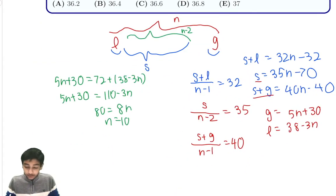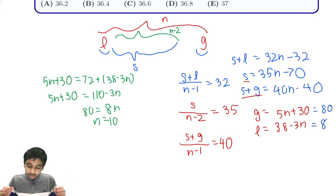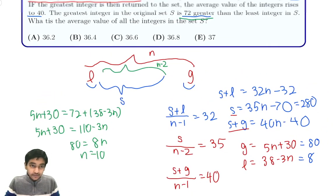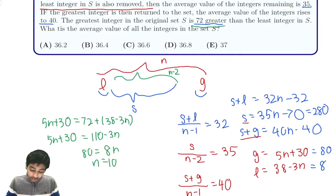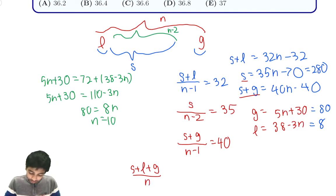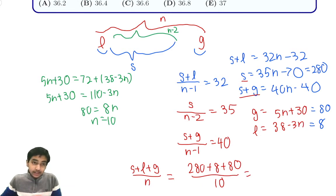Now let's substitute n equals 10 back in. G equals 5(10) plus 30 equals 80. L equals 38 minus 3(10) equals 8. And s equals 35(10) minus 70 equals 280. The average of all integers in the set is s plus L plus G over n, which is 280 plus 8 plus 80 over 10, giving us 368 divided by 10 equals 36.8. That is the answer.